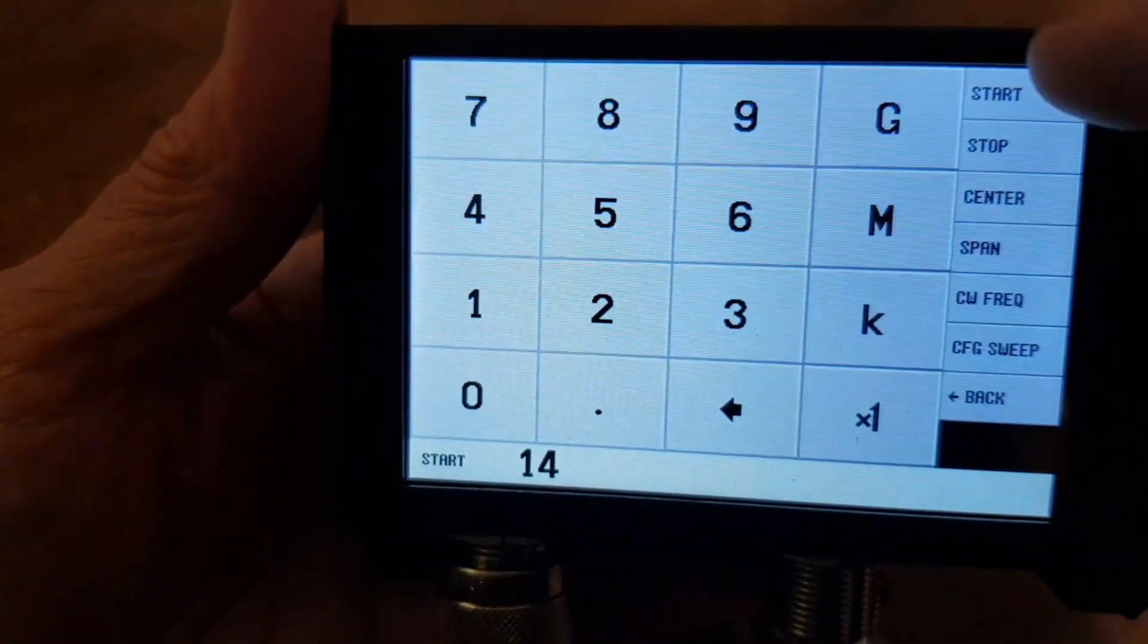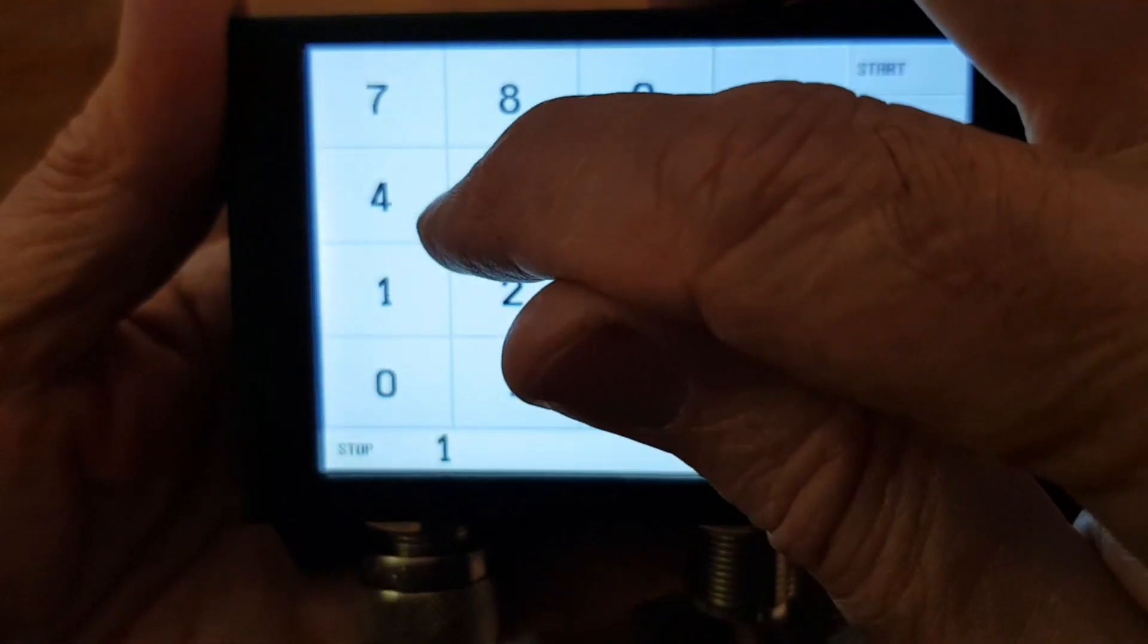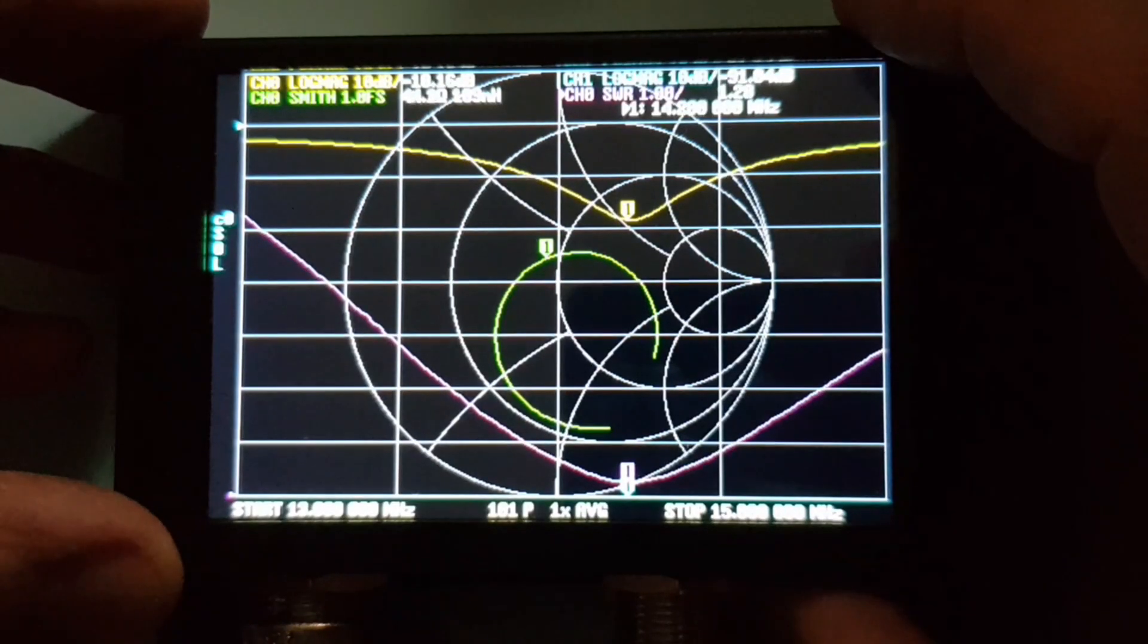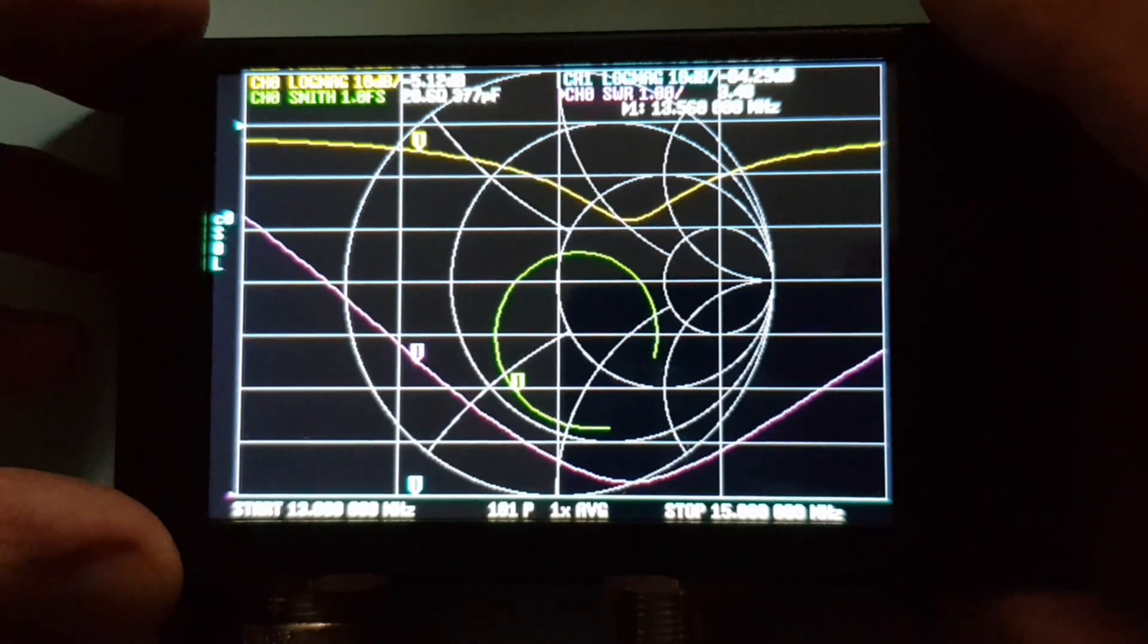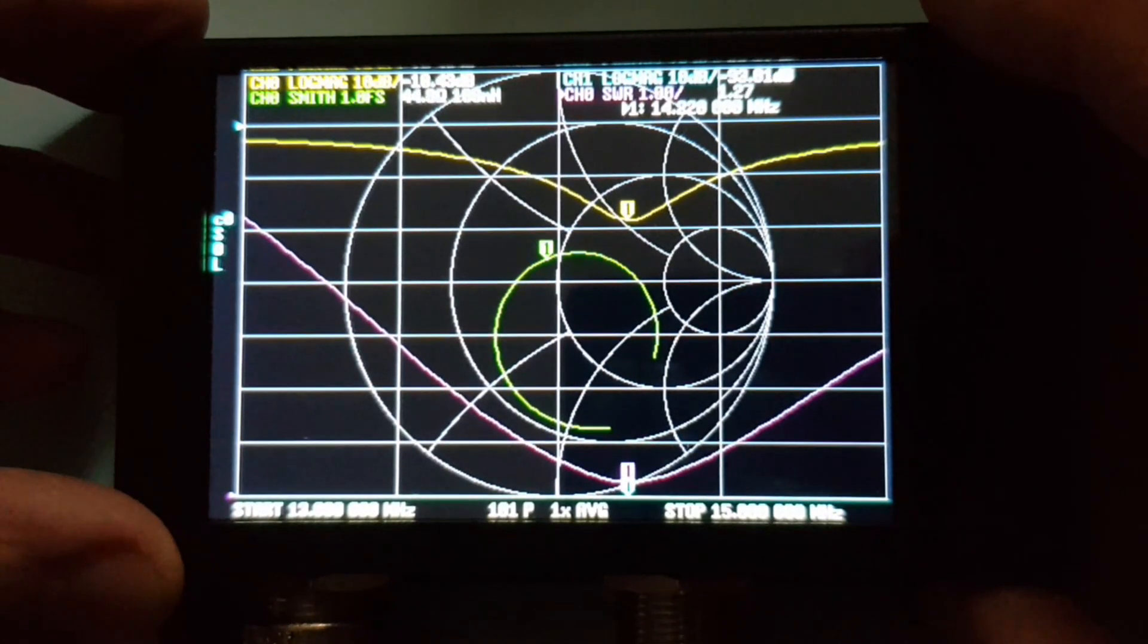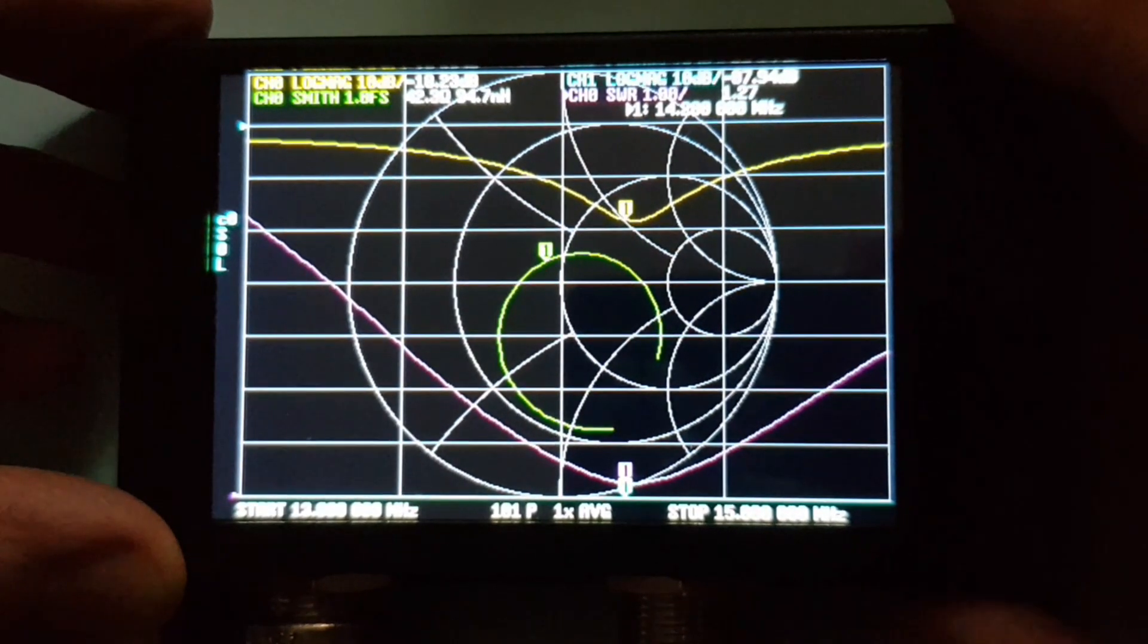The coax is long enough to get me inside the shack. And with the Nano VNA, it's easy to check resonance. And with a little bit of pruning, I've got it down to about 1.27 at 14.2. So far, so good.